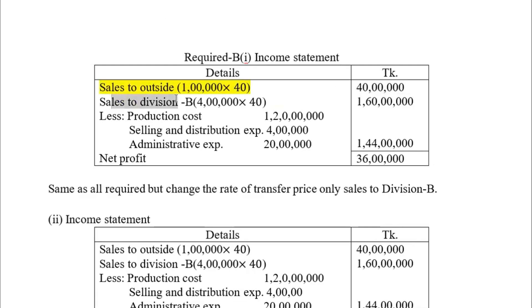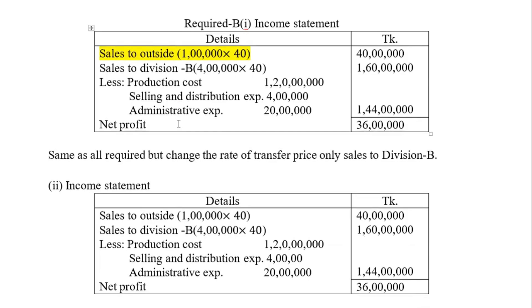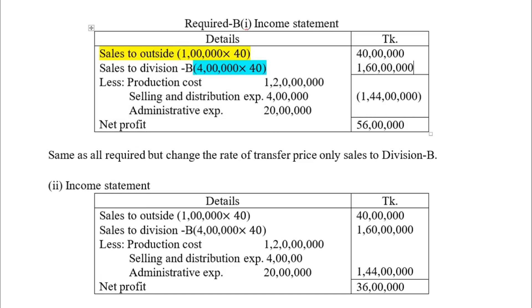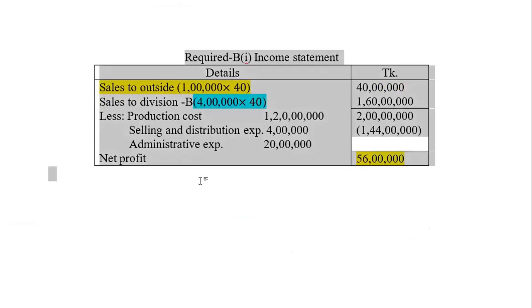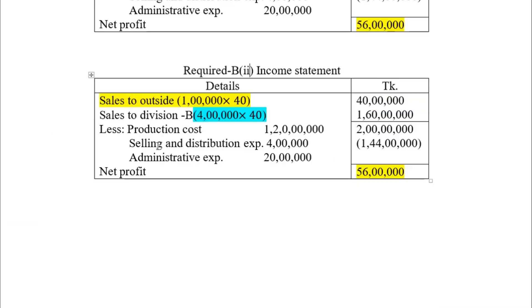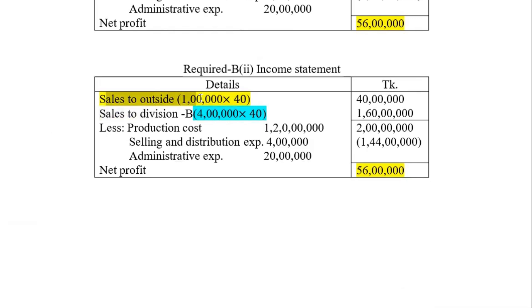The income statement structure includes: sales to outside customers and sales to Division B (the Lighting Division). For Division A (Battery Division), revenue includes both external sales and internal transfers. Production cost, selling and distribution expense, and administrative expense are deducted to arrive at net profit. The transfer price changes under each method, so the net profit will differ accordingly.